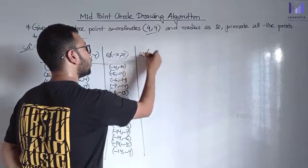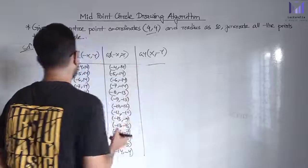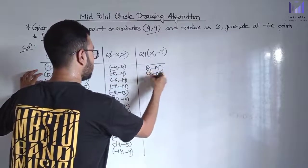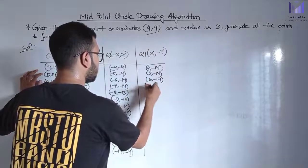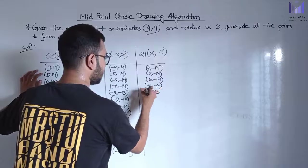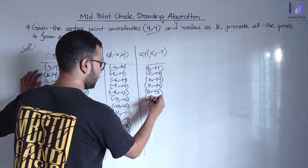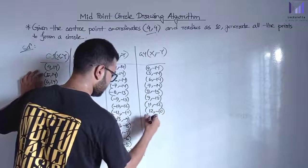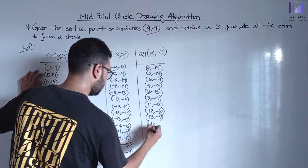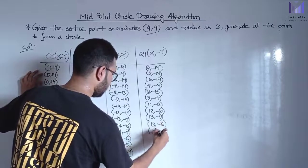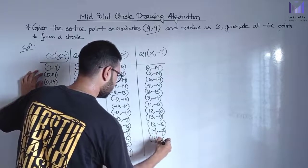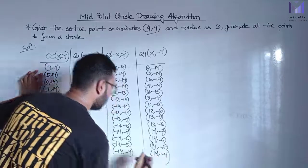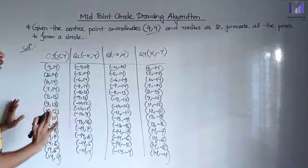Q4 coordinates (x positive, y negative): 4 minus 14, 5 minus 14, 6 minus 14, 7 minus 14, 8 minus 13, 9 minus 13, 10 minus 12, 12 minus 10, 13 minus 9, 13 minus 8, 14 minus 7, 14 minus 6, 14 minus 5, 14 minus 4.